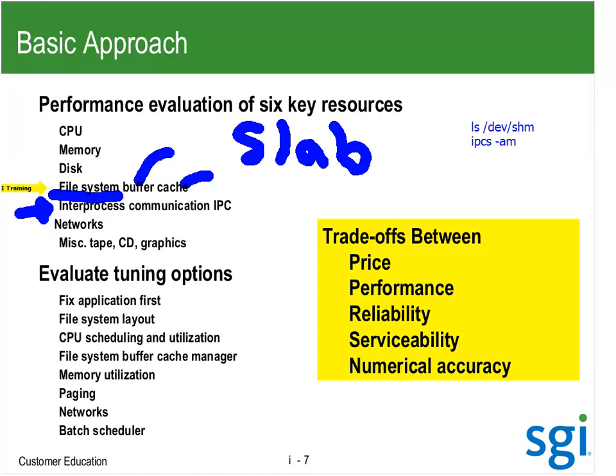By default, /dev/shm is allocated first touch. I could run on a CPU, create a terabyte file, and now I'm out of memory on that node. If I don't remove the file when done, nobody else can use that memory, and they take performance hits. I'm going to say numbers like a 40% performance hit — 40% degradation when going across the interconnect, across NUMAlink. Worst case scenario. I intend to create some memory leaks using shm.